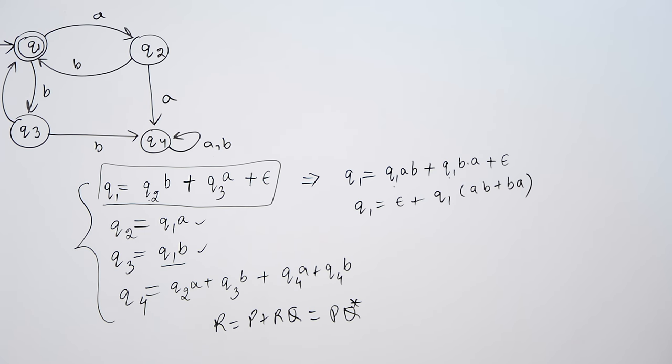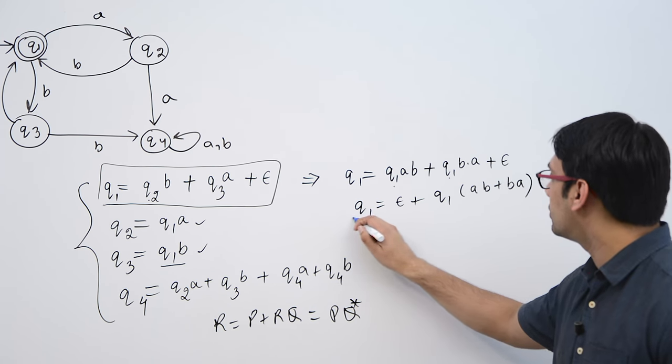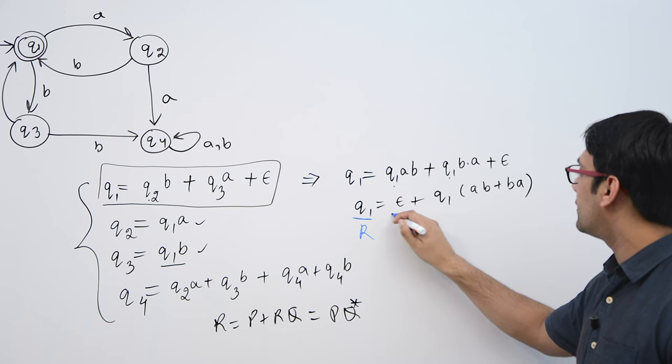Now if you compare it with the Arden's theorem, you can see this is r. This one is r. This is r. This is p.